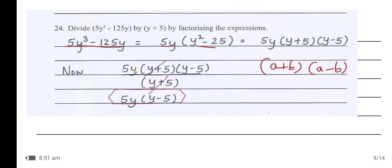Divide (5y³ − 125y) by (y + 5) by factorizing the expression. 5y³ − 125y = 5y(y² − 25) = 5y(y + 5)(y − 5). Dividing by (y + 5), the (y + 5) terms cancel, giving the answer 5y(y − 5).